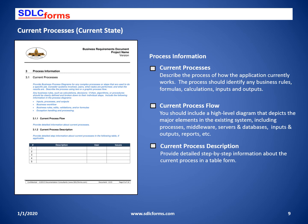Describe the current processes in order to readily differentiate between the current and proposed processes that you will also identify. The current processes should include the business workflow, any algorithms, decisions, validations, exception handling, user interactions, and when tasks are performed and what the expected results are. The current process flows should be fairly detailed, depicting the data architecture including every element in the design. The current process description should explain how the entire process works.